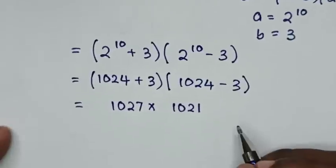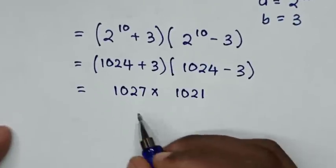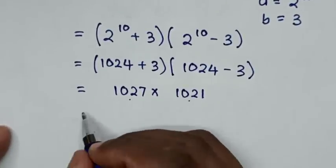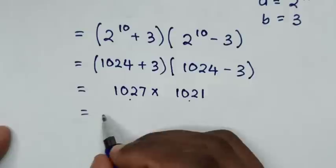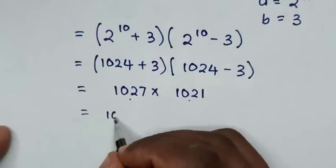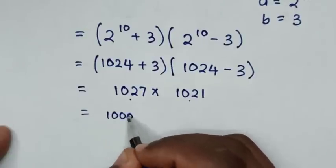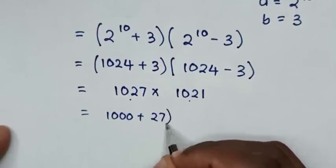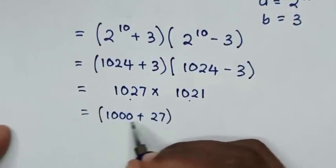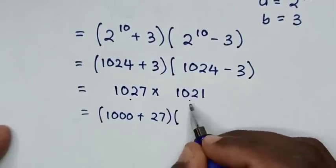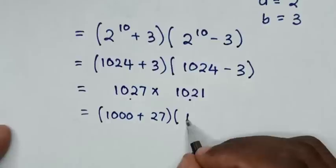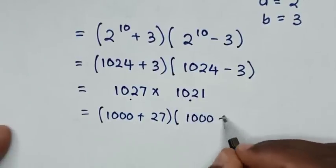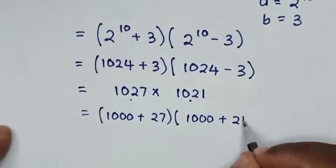Then in the next step, 1000 is common. So it will be equal to 1000 plus 27, bracket times 1000 plus 21.